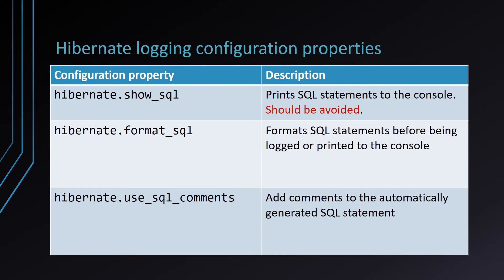Hibernate offers three log-based configuration properties: Show SQL, Format SQL, and Use SQL Comments. The first one, Show SQL, is to be avoided. That's because it prints the statement to the console, and for the same reasons you use a logging framework like Log4J or LogBack instead of printing to system out, you have to use a logging framework for Hibernate generated SQL statements as well. The second one, Format SQL, can be used to print the SQL statement using a multi-line formatter. The third one, Use SQL Comments, causes Hibernate to annotate SQL statements with various comments, which can help you understand why a given statement was generated in a certain way.